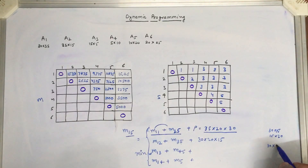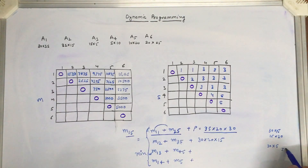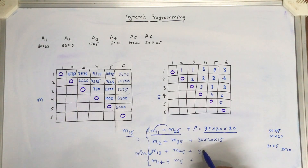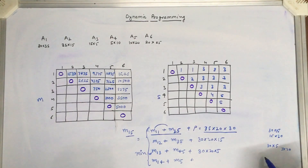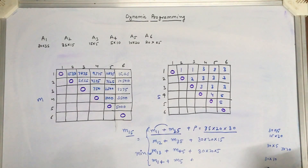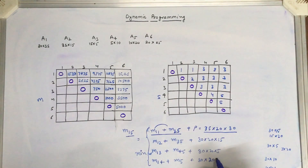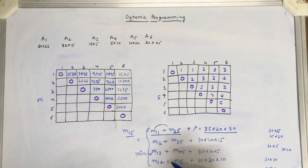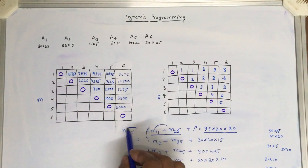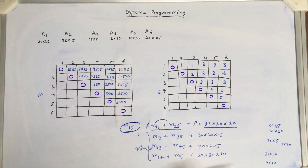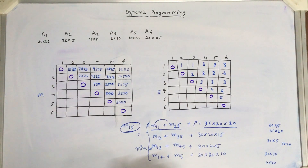For the case 1 to 3, it gives order 30 by 5, and matrices 4 to 5 give order 5 by 20, so the total multiplications required is 30 × 20 × 5. Similarly, for 1 to 4, the order is 30 by 10 and matrix 5 has order 10 by 20, so the total is 30 × 20 × 10. Whatever the minimum value among these three, we fill that in cell m15.